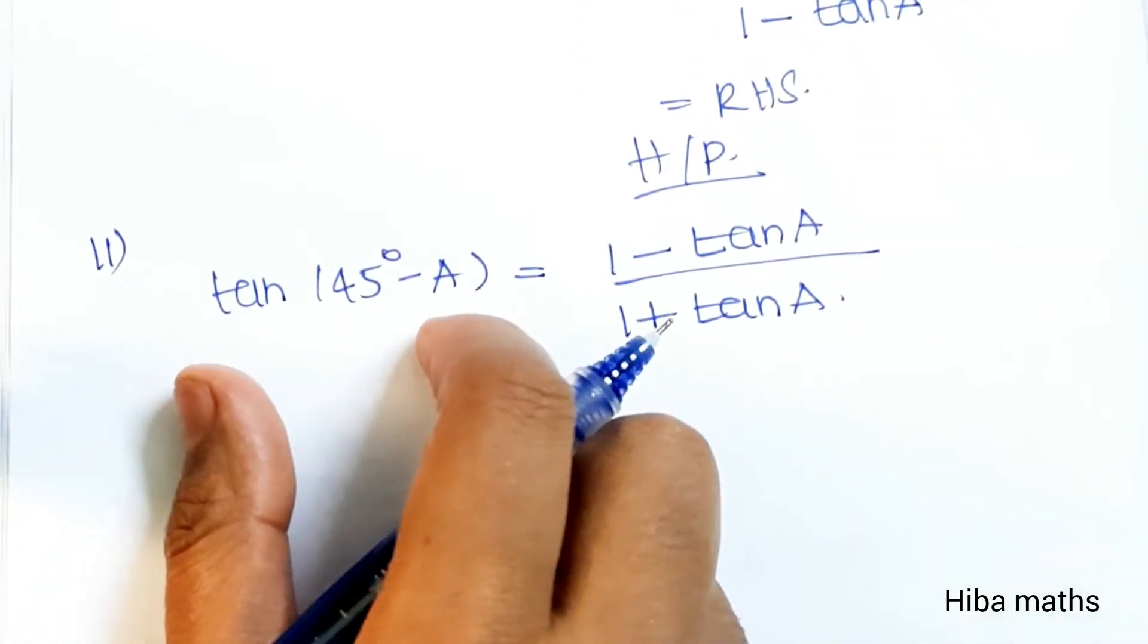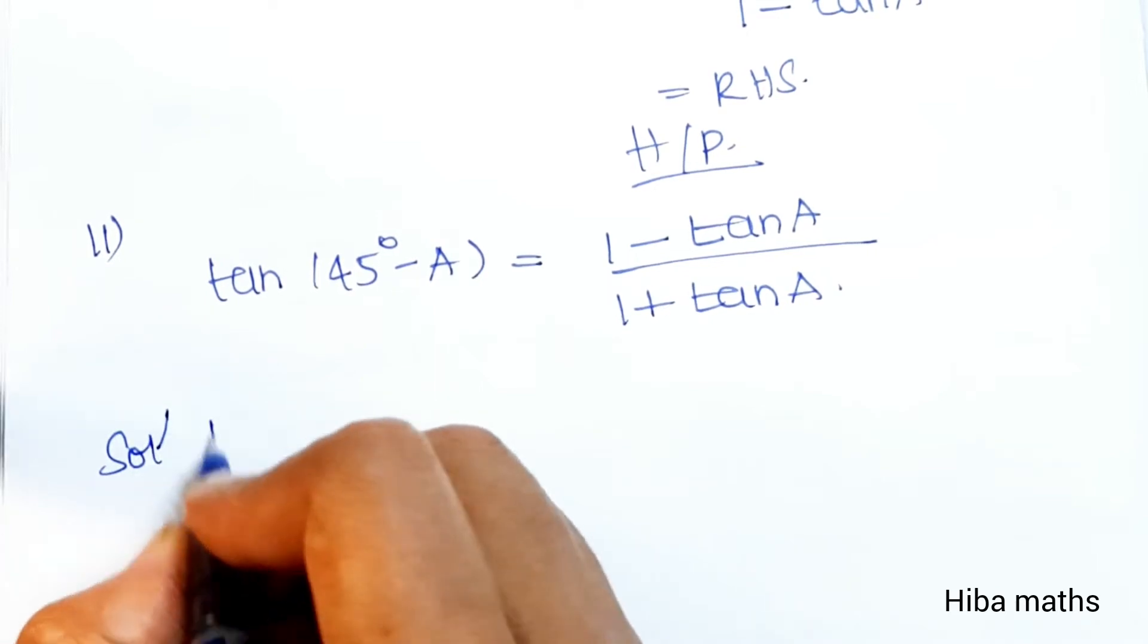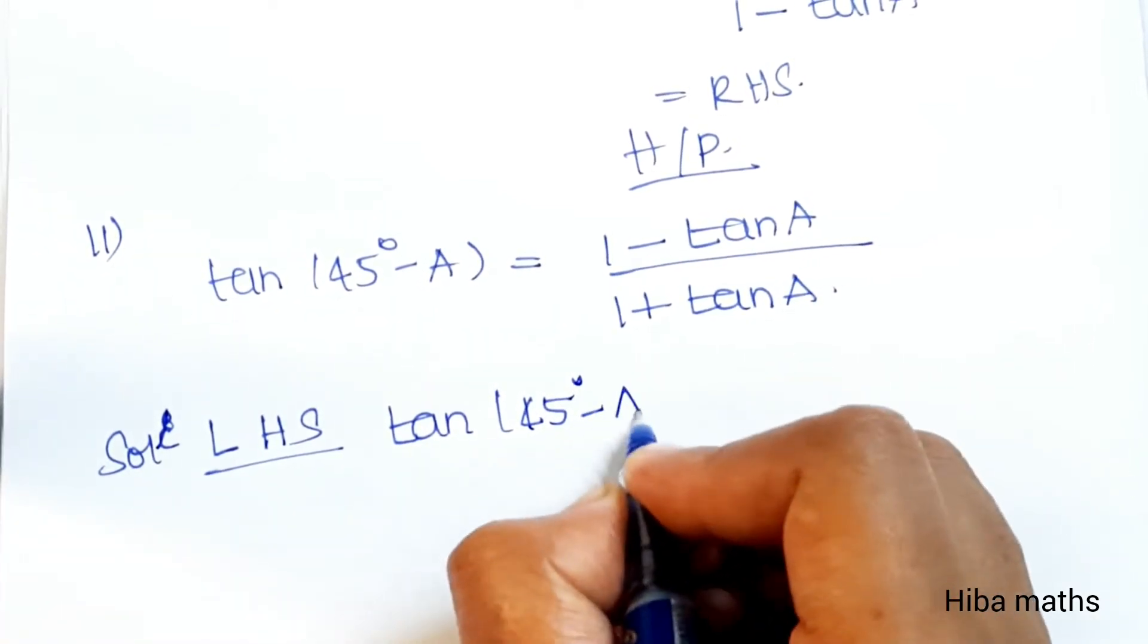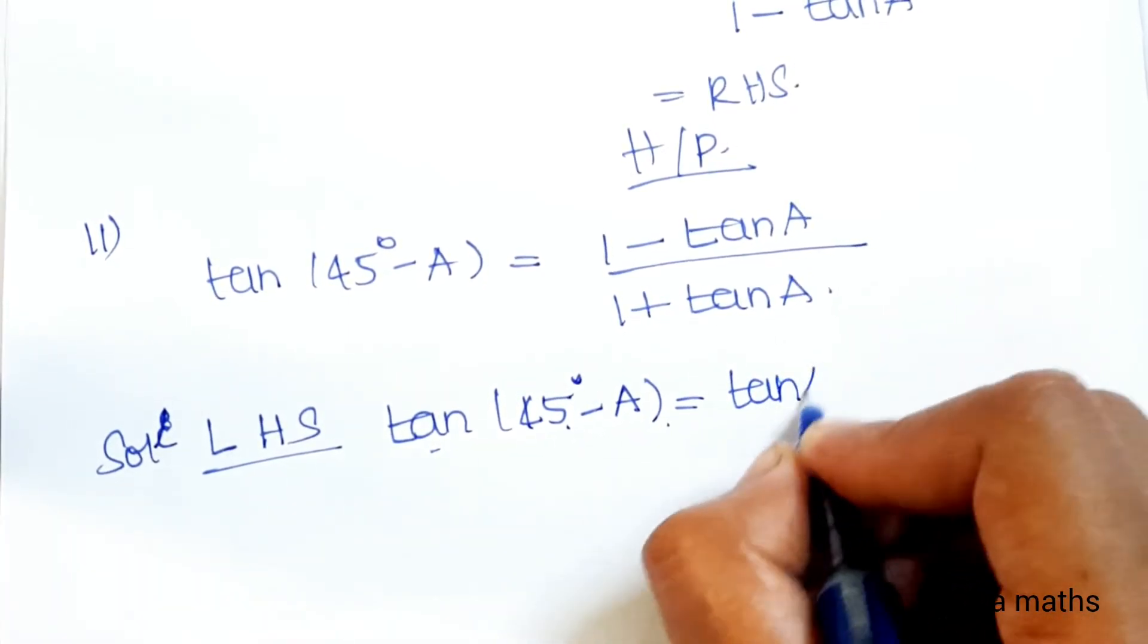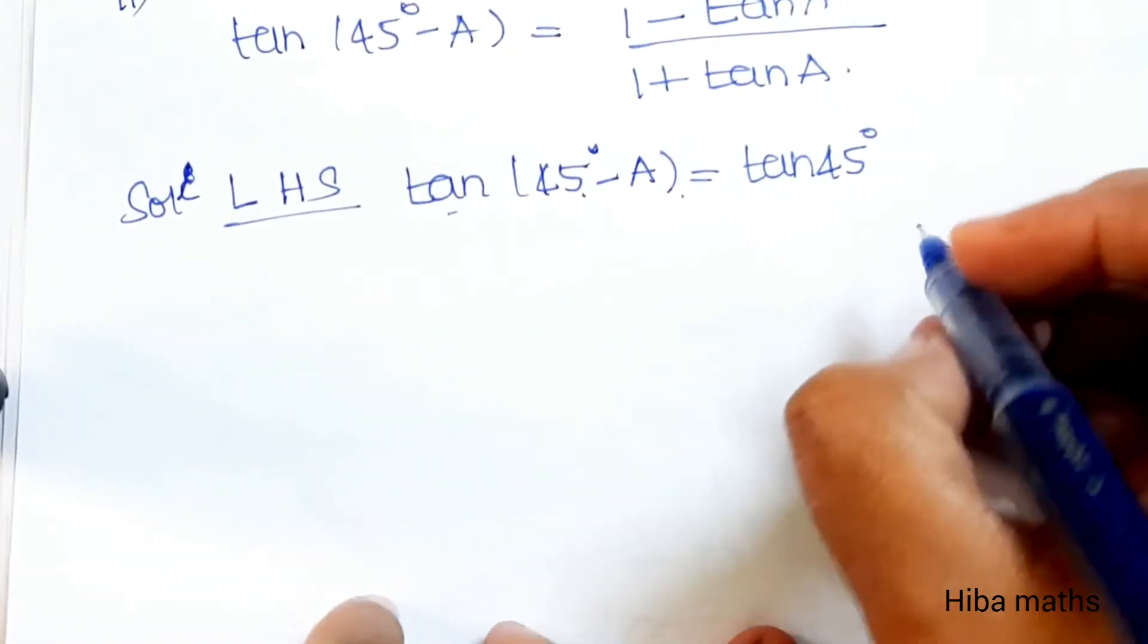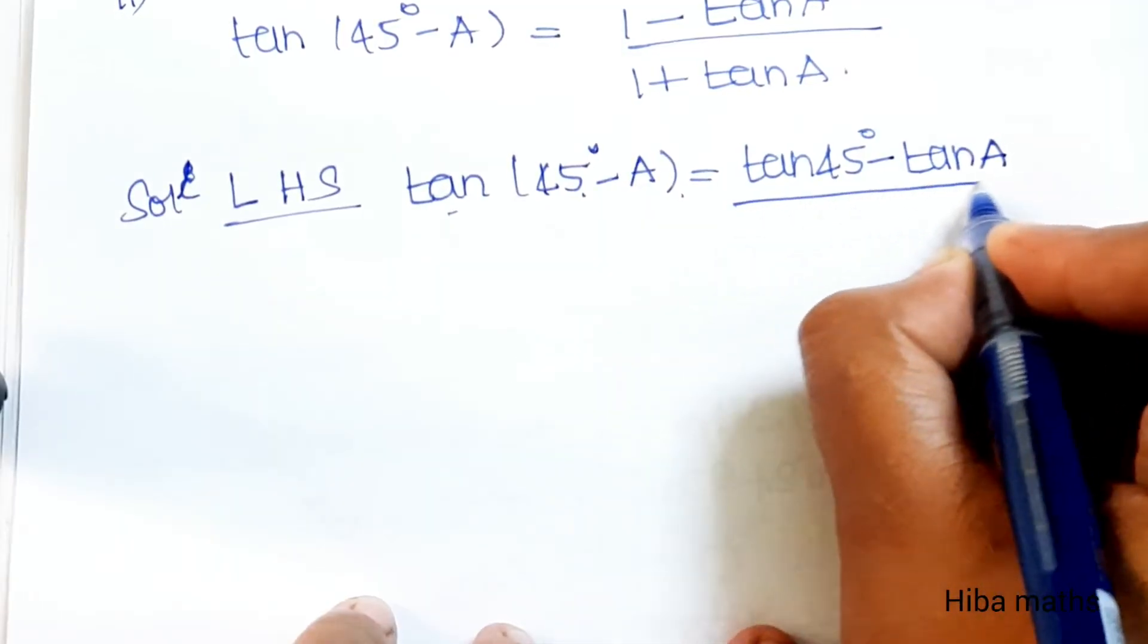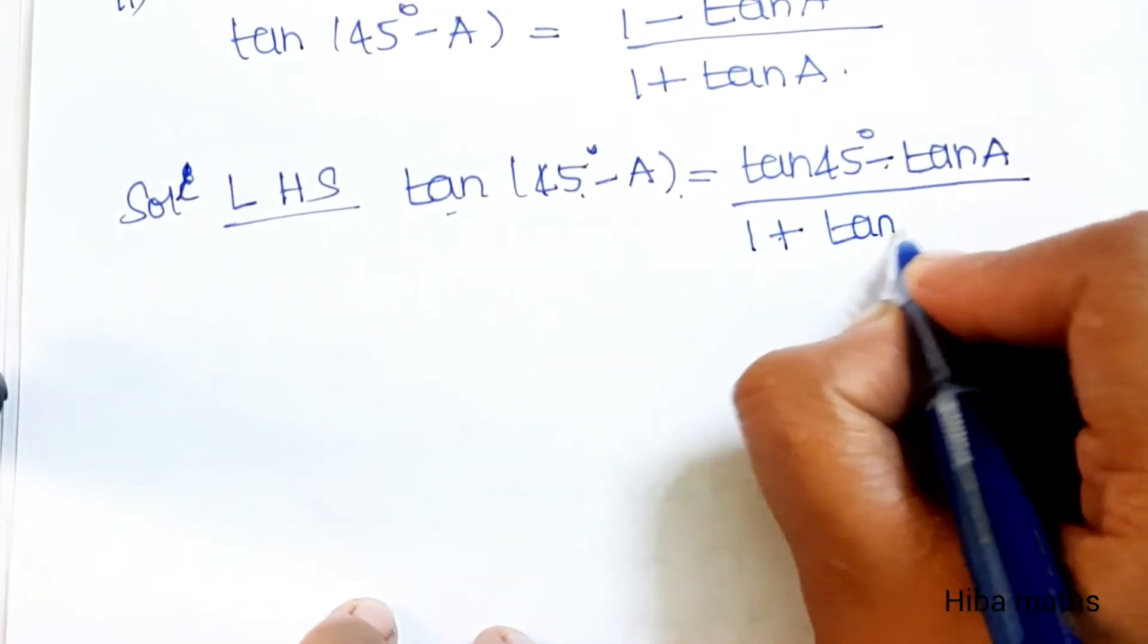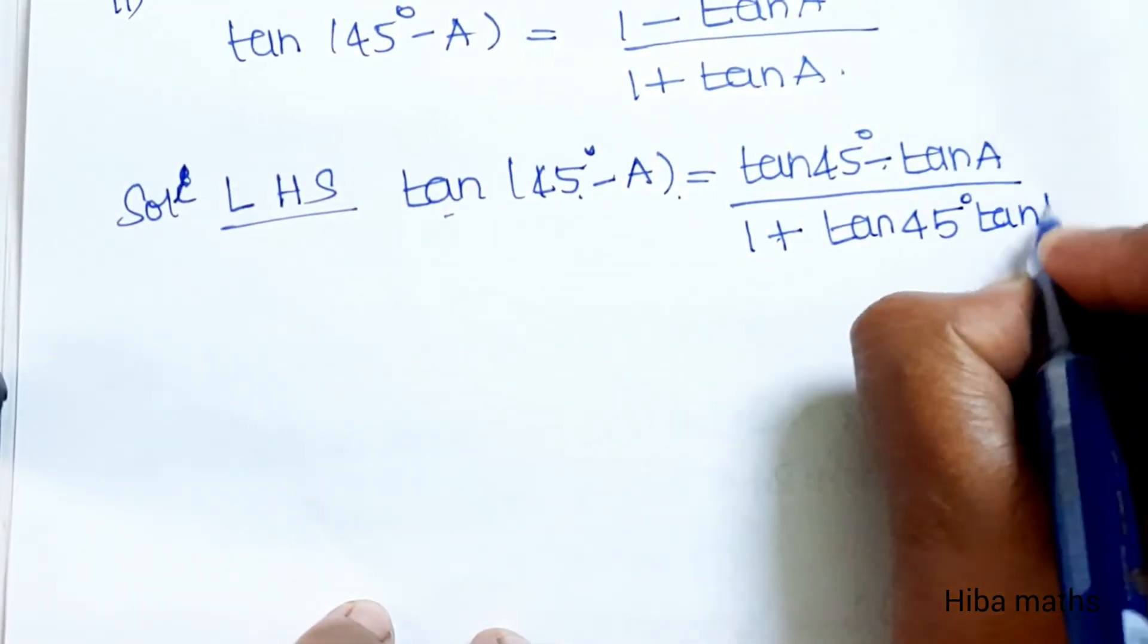Solution: This is the tan(A - B) formula. tan(45° - A) = (tanA - tanB) divided by (1 + tanA·tanB). So (tan45° - tanA) divided by (1 + tan45°·tanA). Now tan45° is 1.